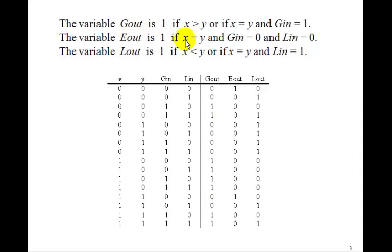Eout is 1 if x is equal to y and Gin and Lin are both 0. Well, here's the case, 0, 0, 0, 0. And there's only one other case, when they're both 1's and they're both 0's. So Eout has a 1 only here and here.